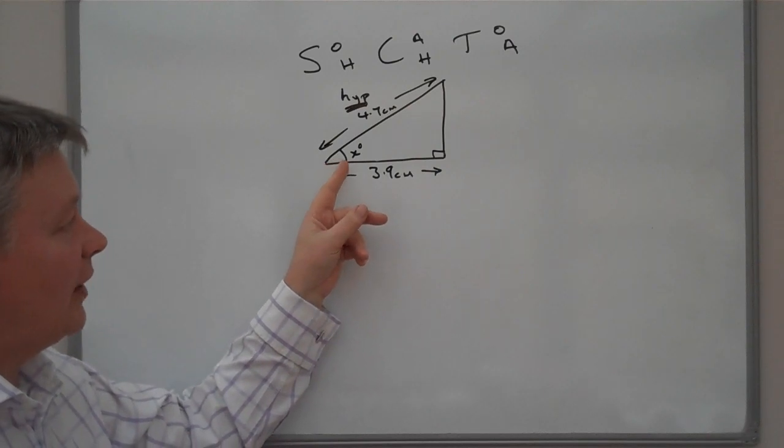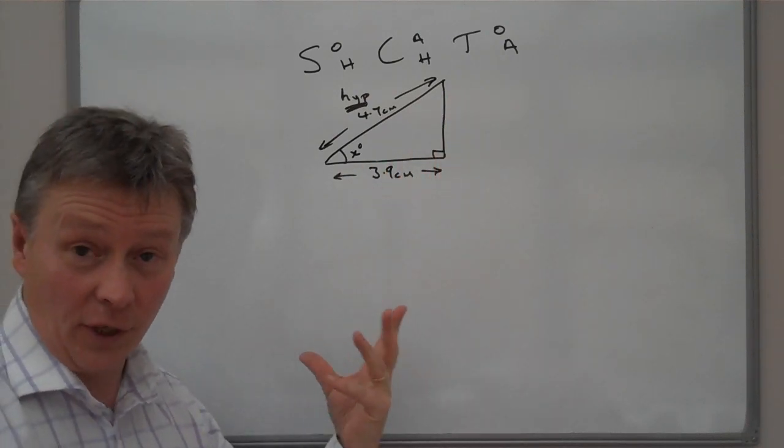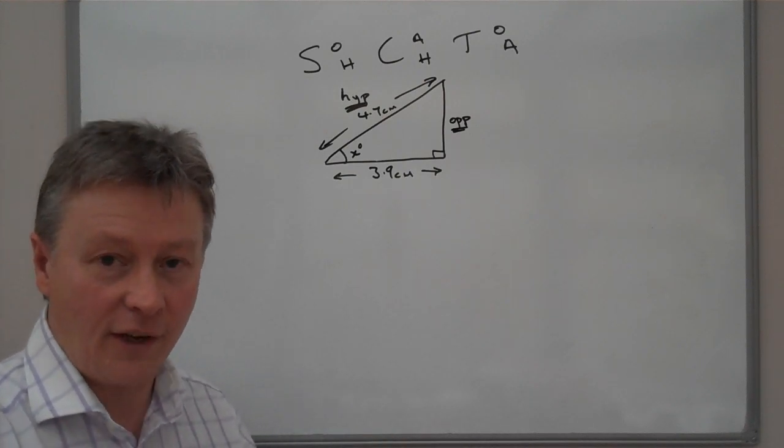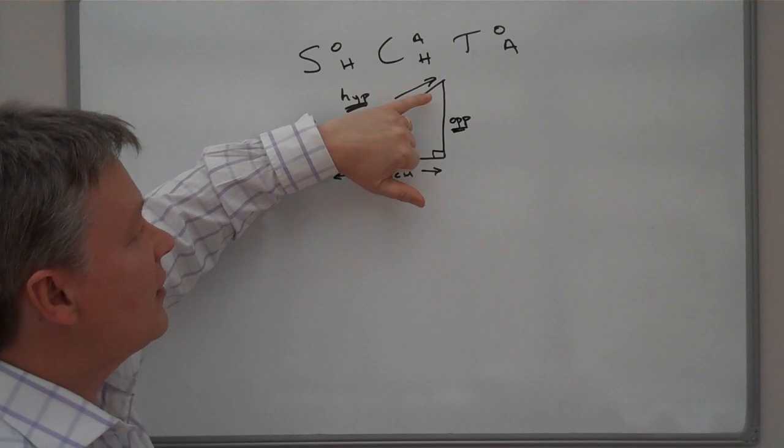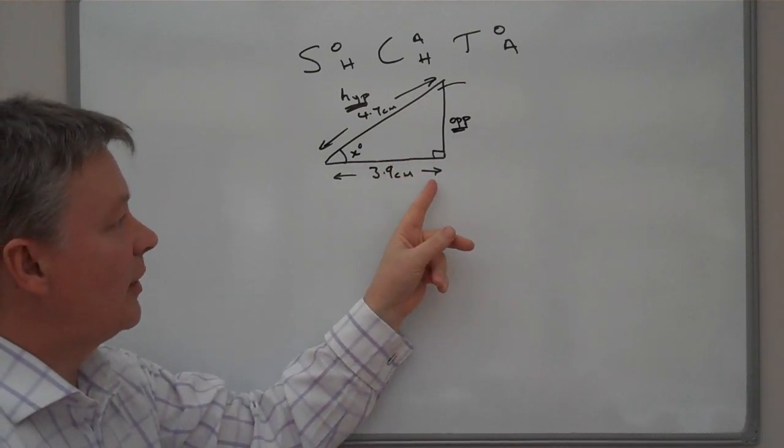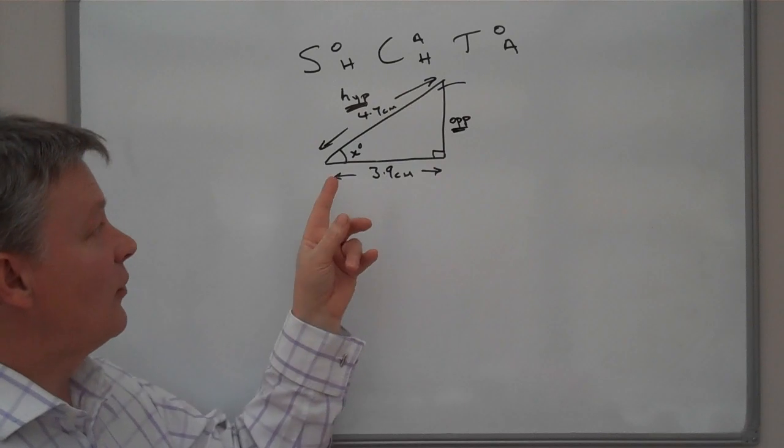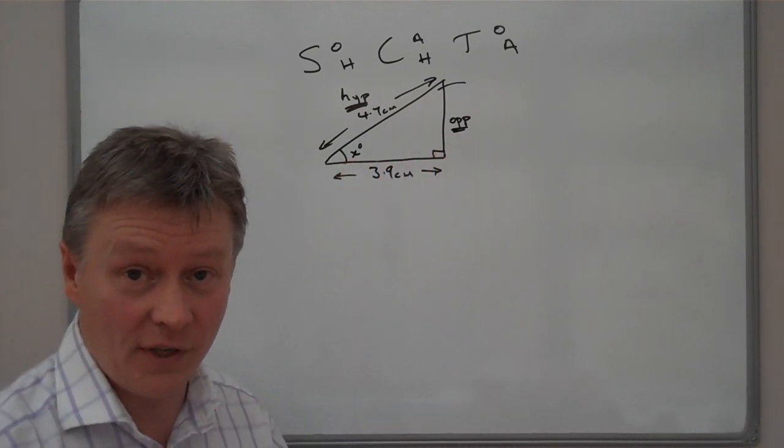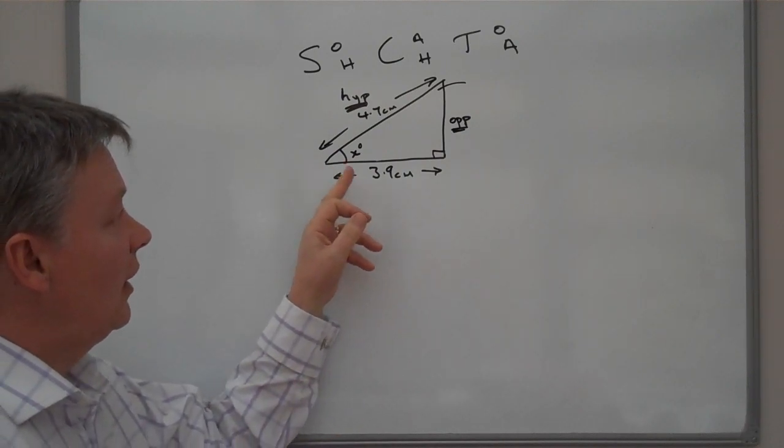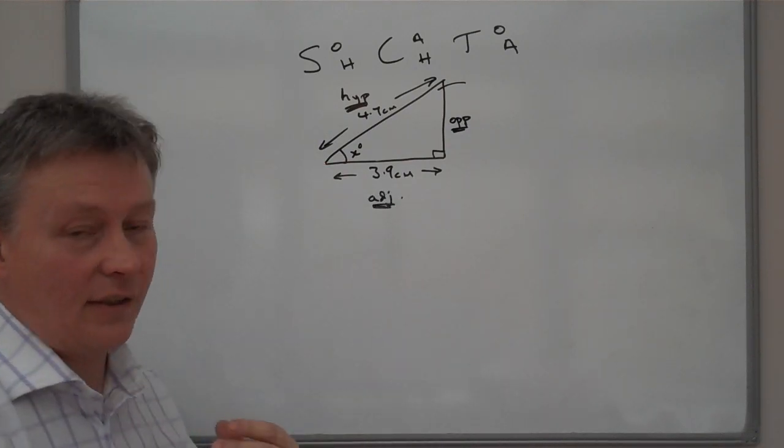The other thing to look at is that we are being asked to find out the value of x degrees. Now opposite x degrees is this side here, so we're going to call that the opposite. It is worthwhile pointing out that if we were looking at a different angle, then this 3.9 centimeters at the bottom would be the opposite, so you've got to be a little bit careful because they are interchangeable. The line along the bottom here is adjacent to the angle, so I'm going to call that ADJ, adjacent to the angle.